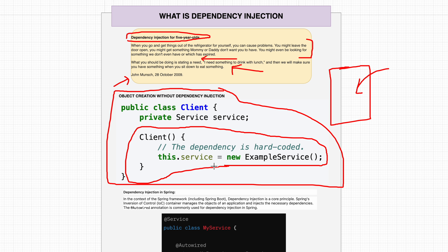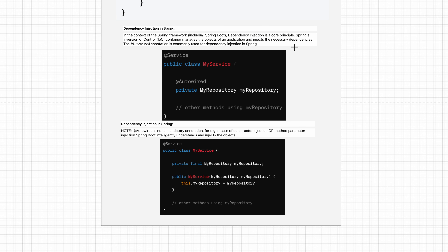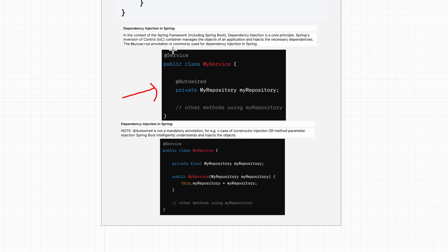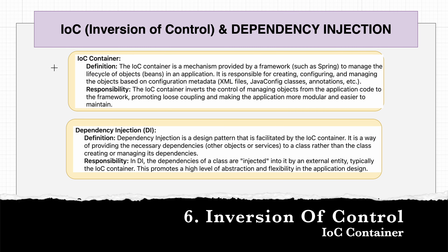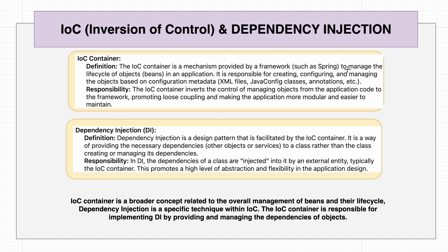With dependency injection, the dependency is automatically injected for the client to use. In Spring Boot, dependencies are automatically injected using @Autowired — though it is not mandatory. The dependency is already created and injected for you; you don't have to create the repository yourself. The responsibility of creation is handled externally. The IoC container provides the way to manage the lifecycle of objects, responsible for creating, configuring, and managing objects based on configuration metadata.